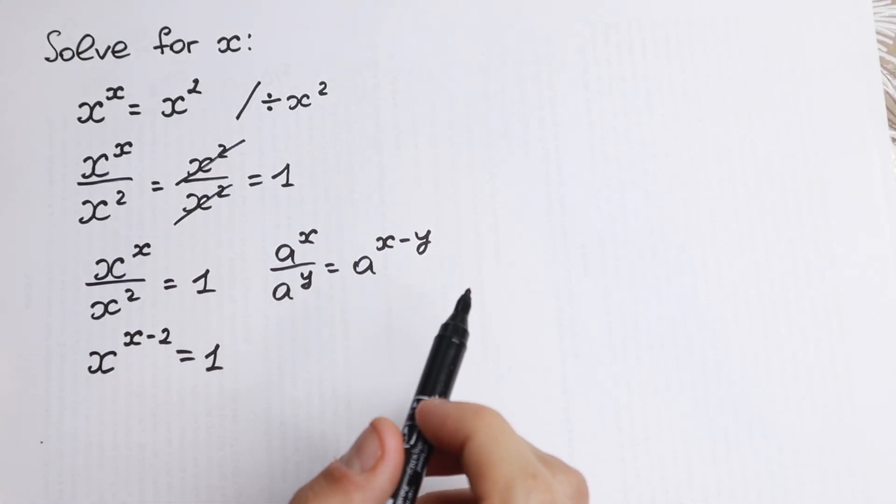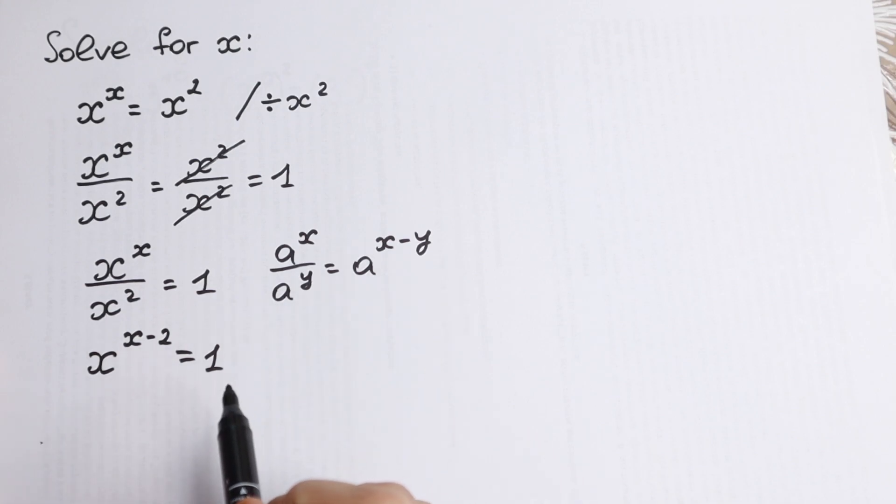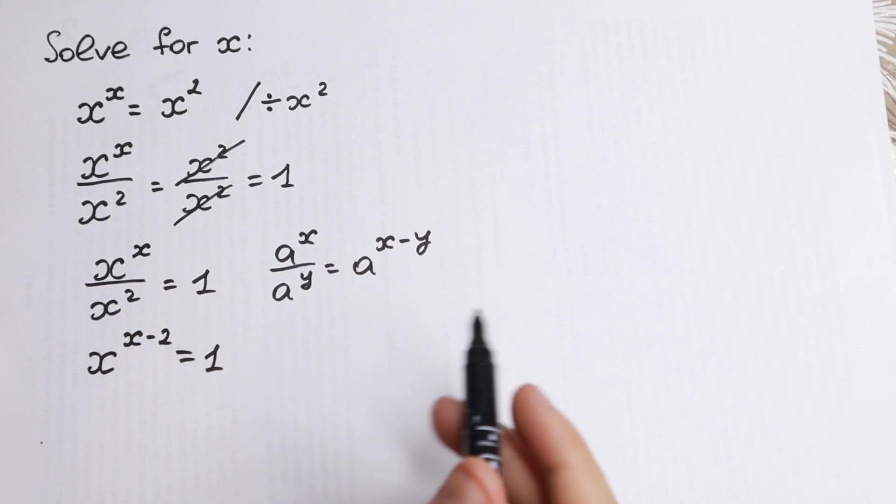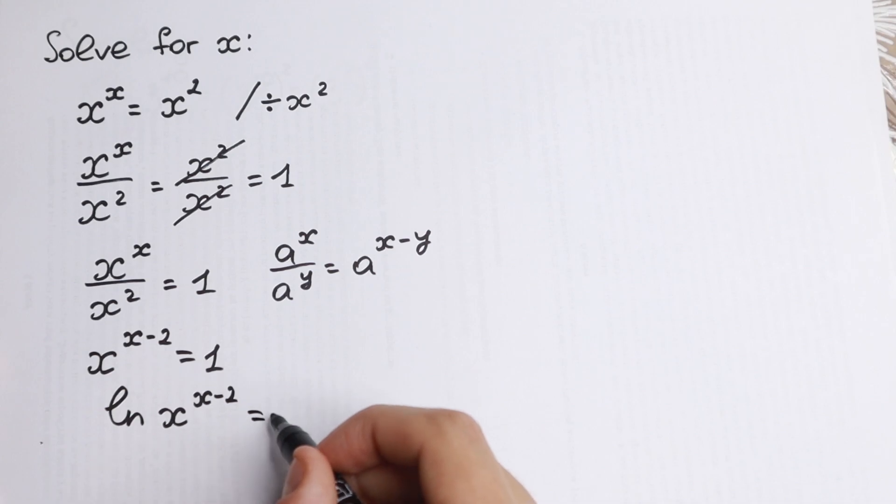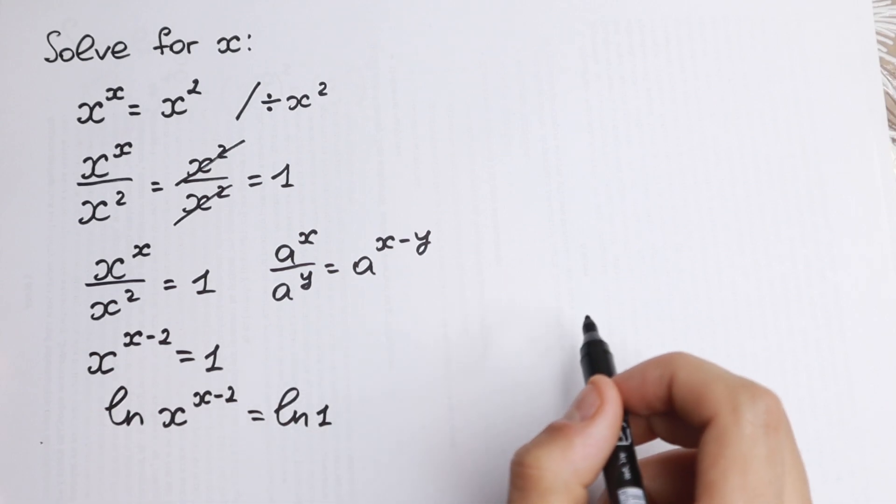Why is this good for us? Because right here we can easily take log from both of the sides, for example natural log. If we take a natural log from both sides we have natural log x and right here x minus 2 as a power equal to natural log 1.